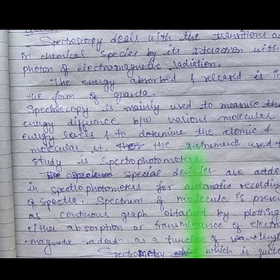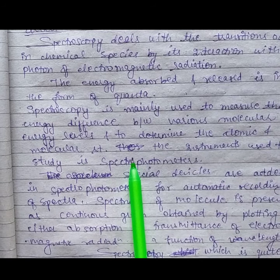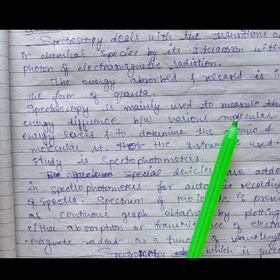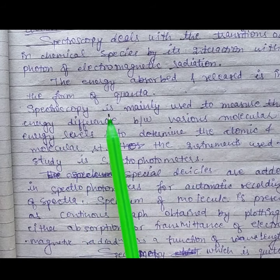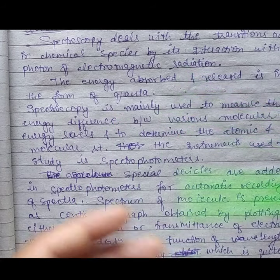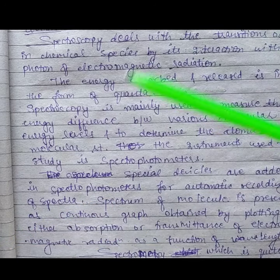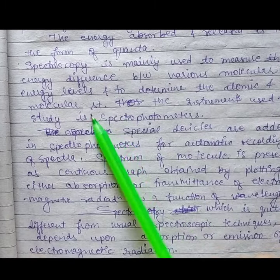The instruments used to study spectrophotometers. So spectroscopy is used to measure the difference between the energy levels and to determine the atomic and molecular structure.